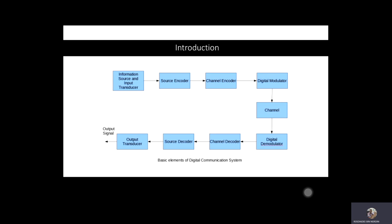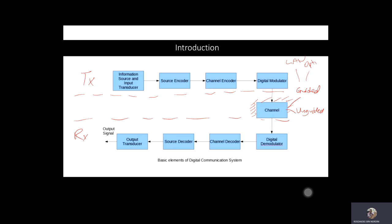Let's look at the communication block diagram established by Shannon-Weaver. Shannon-Weaver specified the role of each block, starting from the transmitter to the receiver, with the wireless channel in between. The channel is basically divided into two types: the first is known as guided and the second is unguided. The guided channel normally refers to physical channels such as land cable and optical cable, while for unguided channels, this subject focuses specifically on the wireless channel.